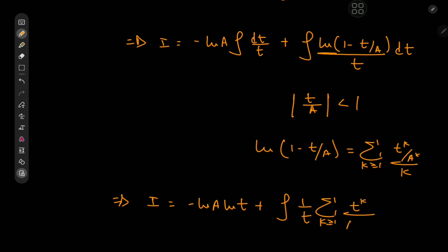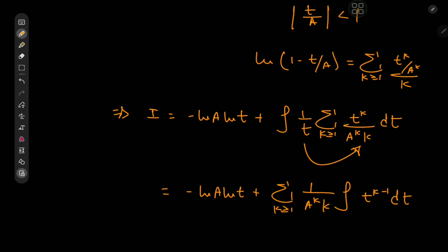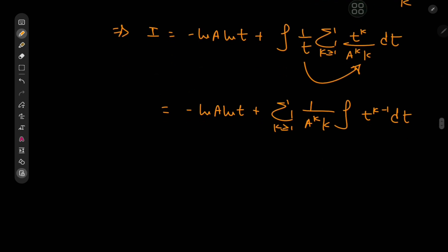We take the 1 over t term inside the summation and switch the integration and summation operators, giving negative log a times log t plus the sum over k of 1 by a to the k times k times the integral of t to the k minus 1 dt. Integrating yields t to the k over k, so I equals negative log a times log t plus the sum over k of 1 by a to the k times k squared times t to the k.